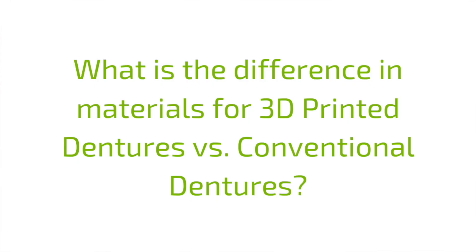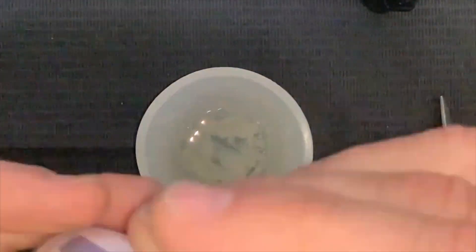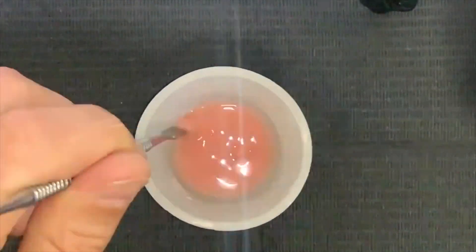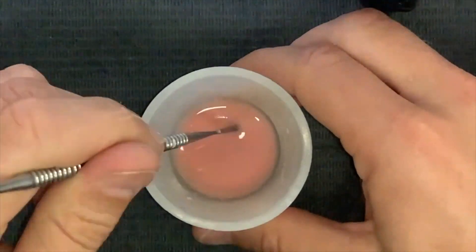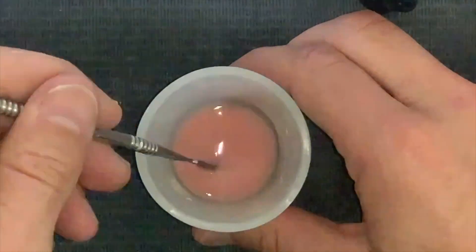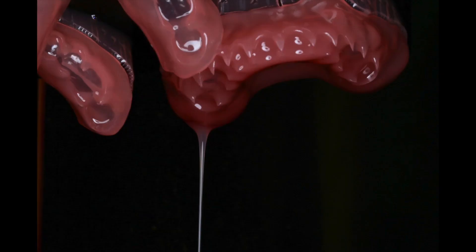What's the difference between the materials used in 3D printed dentures and conventional dentures? Conventional dentures use a monomer-based acrylic that has to be mixed and can be cold-cured or heat-cured. For 3D printed dentures, a light-cure resin is used — it is already in liquid form and is cured through a light-curing process during printing.